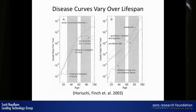More recent work by Horiuchi and Finch et al. showed that even within specific diseases over the human lifespan, there are quite dramatic accelerations and decelerations. Here are decelerations, and here are accelerations. They hypothesised that this would be expected based on evolutionary theory — that before and after reproductive age, we would see different chronic processes at work.